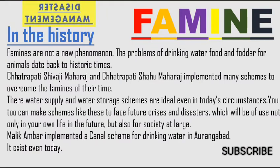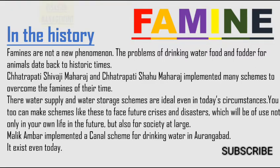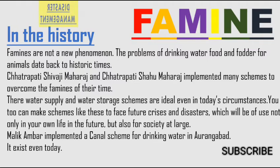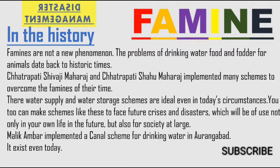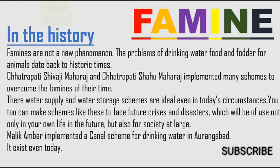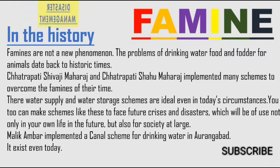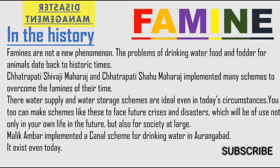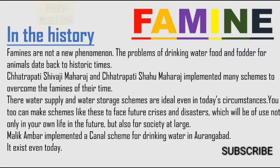Famine is not new — it is found in history as well. The problems of drinking water, food, and fodder for animals date back to historic times. Chhatrapati Shivaji Maharaj and Shahu Maharaj implemented many schemes to overcome the famines of their time. Their water supply and water storage schemes are ideal even in today's circumstances. Malik Amber was the name who implemented a canal scheme for drinking water in Aurangabad, which exists even today.